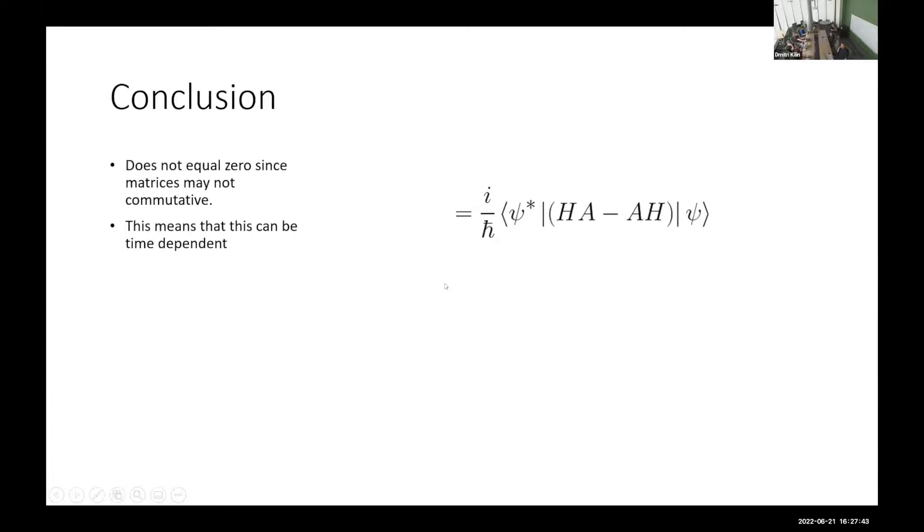From here, from this first part of what I'm presenting about is that these two matrices are not commutative, but there are a select few that are, especially if one of them were to be the identity matrix, and then there's a few examples where two matrices are commutative. And so since it's not always equal to zero, this means that it is or can be time-dependent.